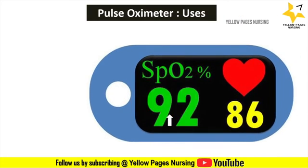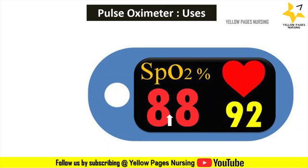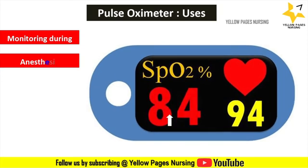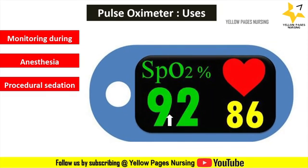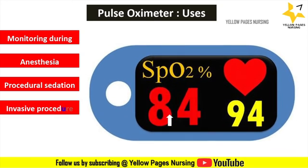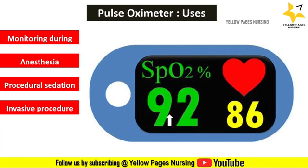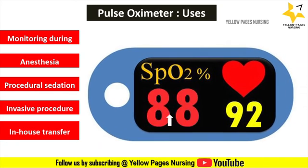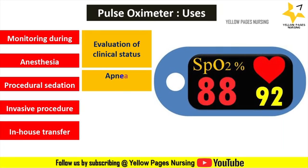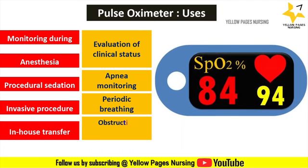Oxygen saturation and heart rate are essential indicators of hemodynamic status. The pulse oximeter helps monitor these indicators during anesthesia before surgery, procedural sedation and analgesia such as reduction of fractures, during tapping procedures like lumbar puncture and other invasive procedures especially in infants, and while transporting patients within or between hospitals. It is also used for evaluation of clinical status like apnea monitoring in infants, periodic breathing, and obstructive sleep apnea.